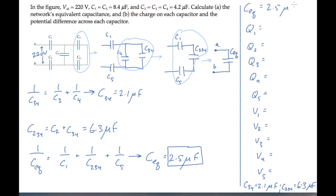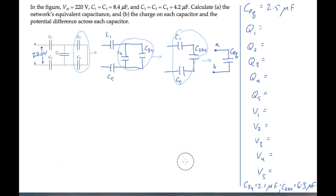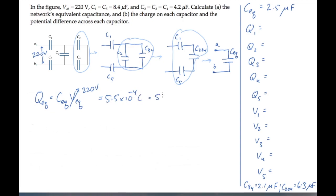Now let me erase this and start working on the values for Part B. We can start by calculating the charge on the final equivalent capacitor. That's the capacitance times the voltage across it, which is 220 volts. We find that the charge on the equivalent capacitor is 5.5 × 10⁻⁴ coulombs, which is 550 microcoulombs. That equivalent capacitor is composed of 3 capacitors in series, one step back in our chain of drawings.